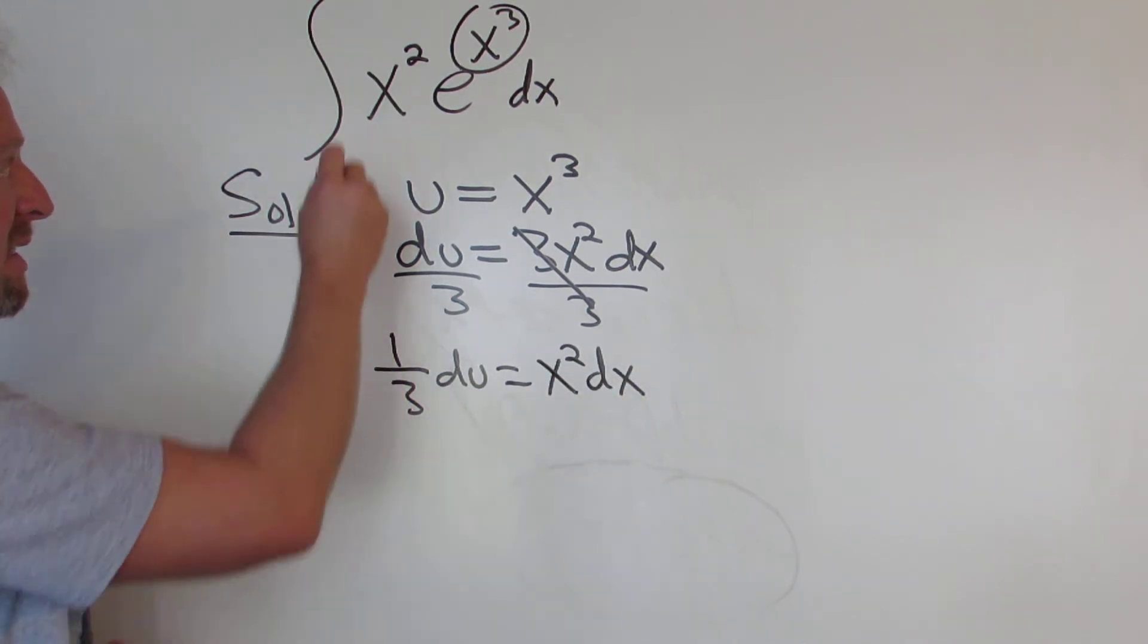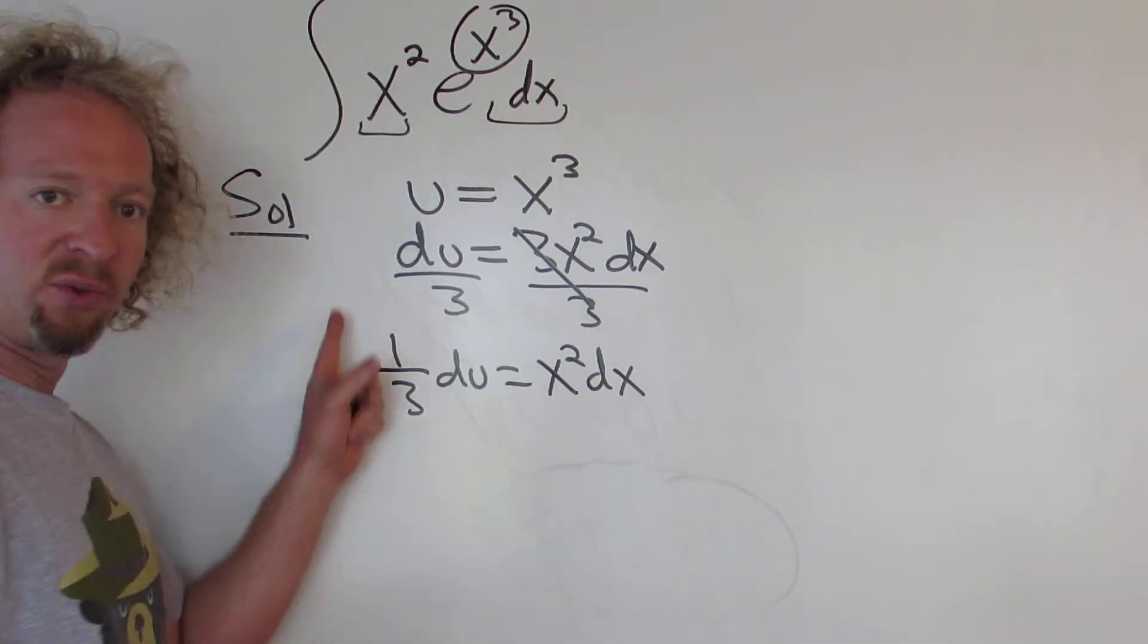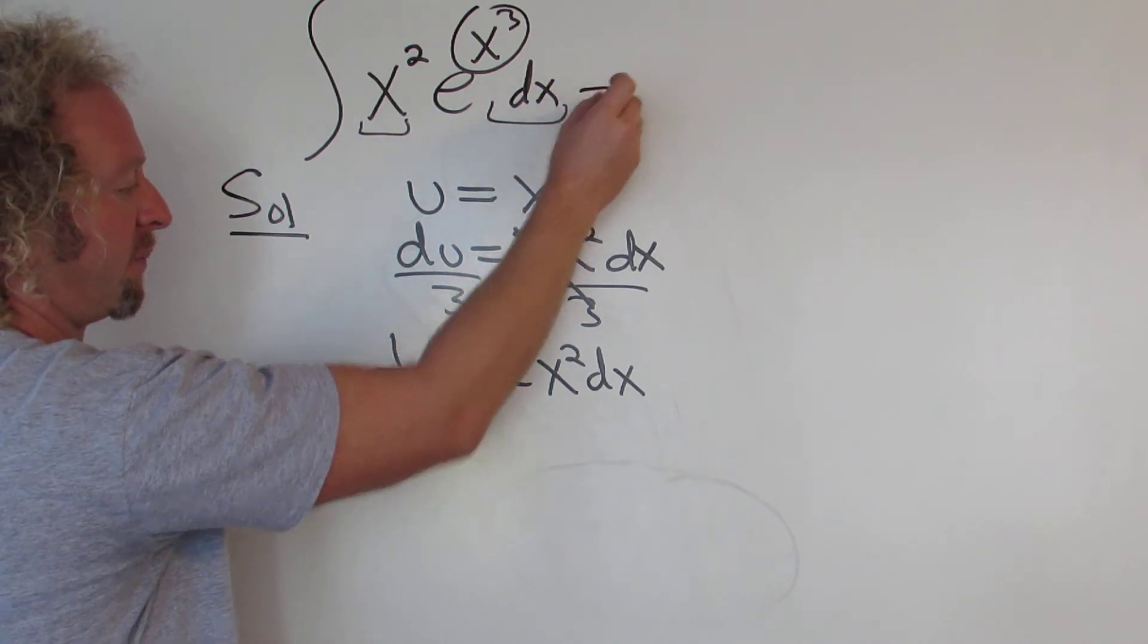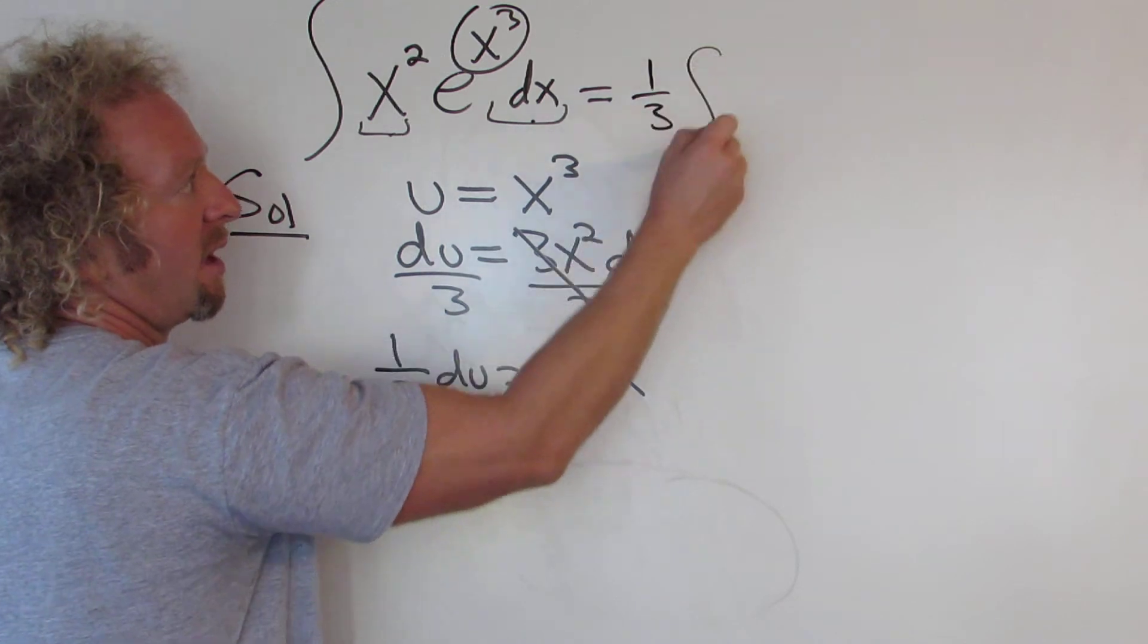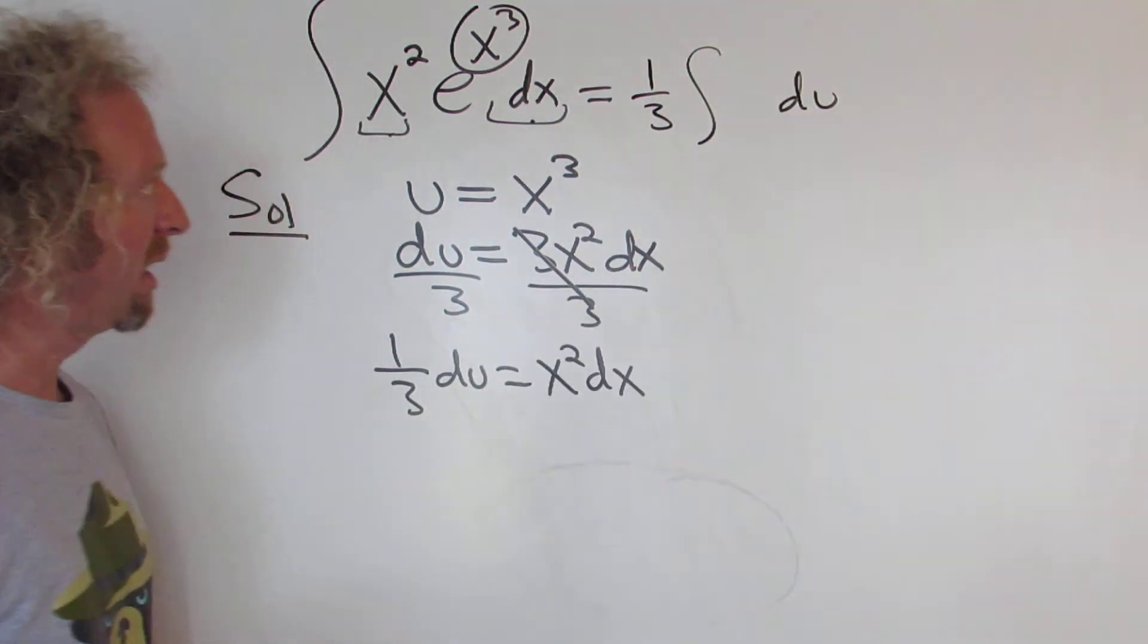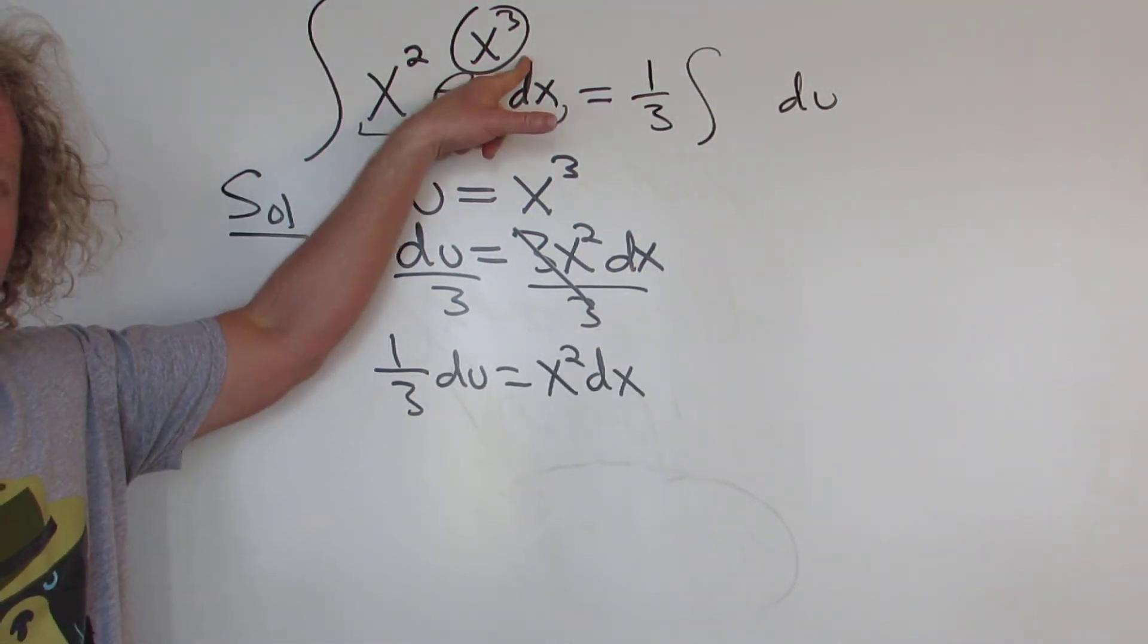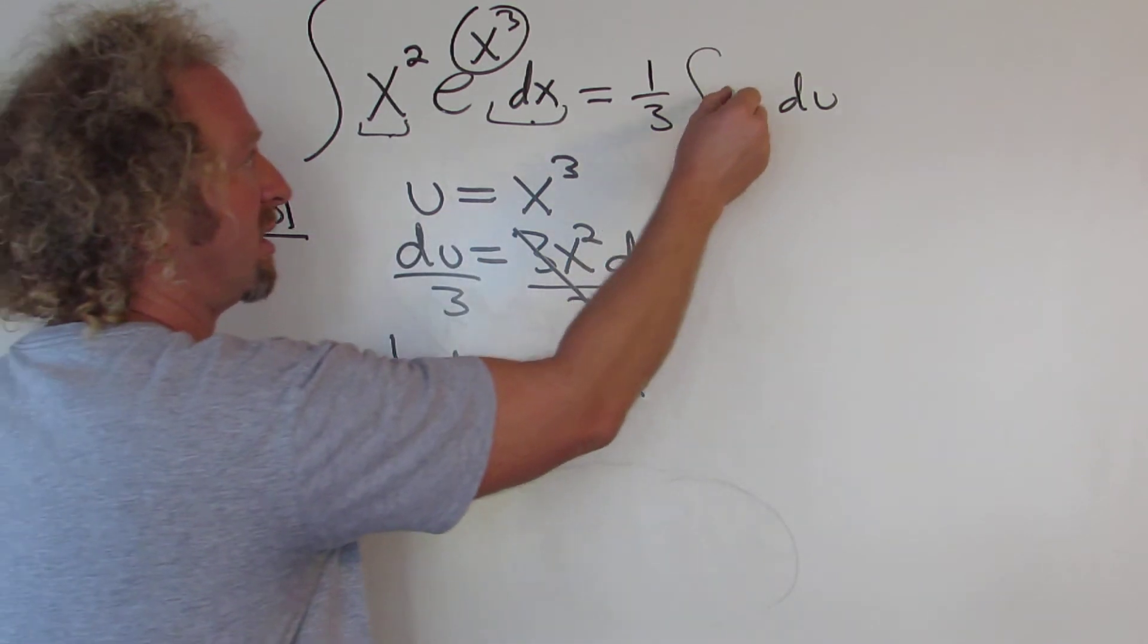And now we're going to replace x squared dx with 1 third du. So this is equal to, x squared dx is going to be 1 third du. So 1 third, then here we have the du. And what's left is e to the x cubed. But we said x cubed is u, so this is e to the u.